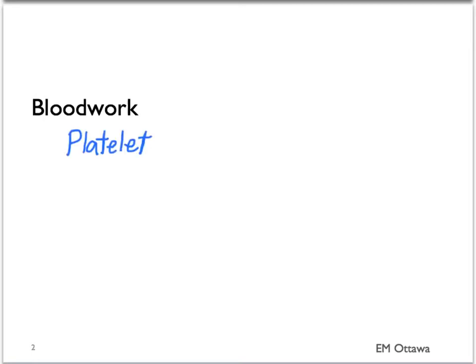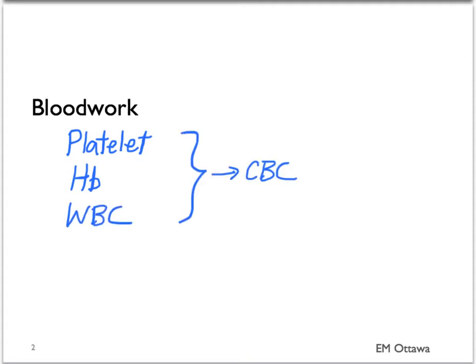We'll first discuss blood work. For any bleeding it is important to first establish that this is not from a generalized bleeding disorder such as thrombocytopenia, or if the patient is taking anticoagulants. Therefore you want to do a platelet count. Hemoglobin is also helpful in quantifying the amount of bleeding. In patients with inflammatory processes such as colitis, the white blood cell count would be high. Therefore a CBC should be ordered.